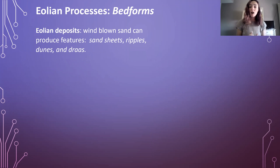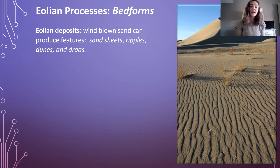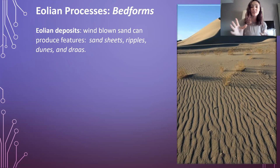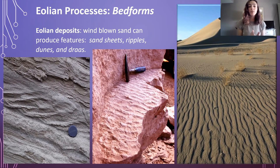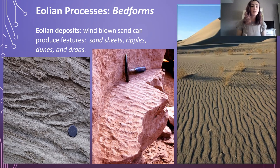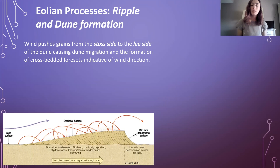Next, aeolian bedforms. Common aeolian bedforms include sand sheets, ripples, dunes, and draas. We can see in the image to the right ripples on the desert ground, and then as we look further into the distance, a larger dune. We can also have preserved features where we see preserved ripples, like in the middle figure, and preserved climbing ripples like in the left figure. We'll talk about what that means for the adjacent environment to aeolian systems later, as well as show examples of preserved dune bedding in later slides.